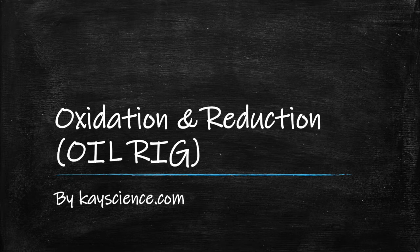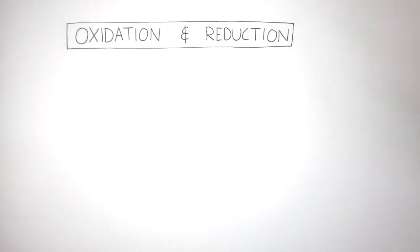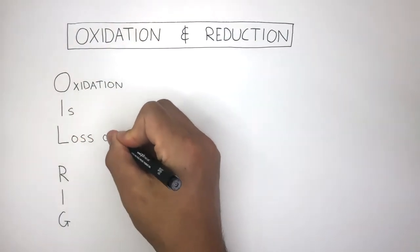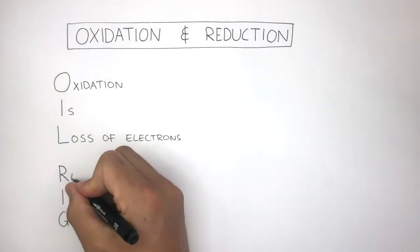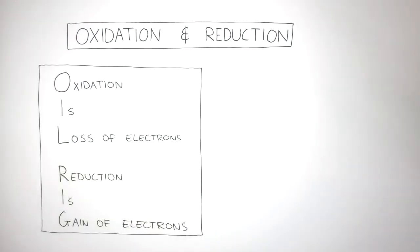Oxidation and reduction, OIL RIG by kscience.com. Oxidation and reduction can be remembered by using OIL RIG, where oxidation is the loss of electrons and reduction is the gain of electrons. So if you ever need to remember what is oxidation, what is reduction, just write down OIL RIG and then figure it out like this.